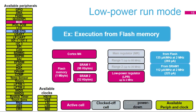In low-power run mode, the main regulator is off and the low-power regulator supplies the logic, allowing a system clock up to 2 MHz. When executing from SRAM, the flash consumption can be reduced by configuring flash memory in power-down mode and gating its clock off. All peripherals can be activated except USB OTG and random number generator. At 2 MHz, there is no limitation regarding the number of peripherals that can be activated. The low-power run mode consumption is 135 microamps per MHz at 2 MHz when executing from SRAM 1. The I2C, USART, LP-UART, and SWPMI clocks can be based on the internal high-speed oscillator at 16 MHz.